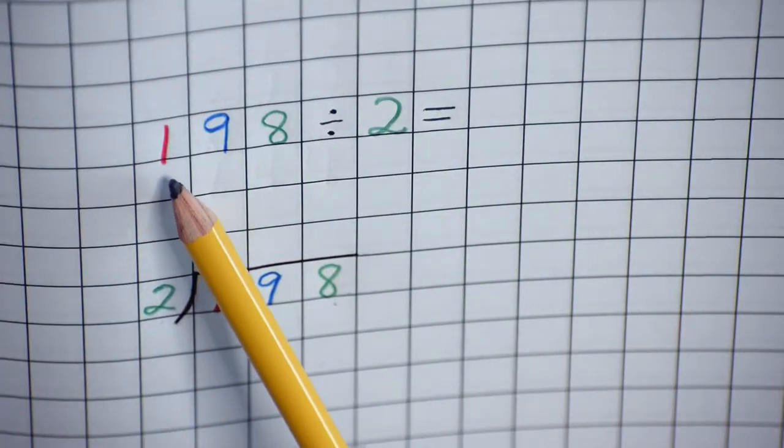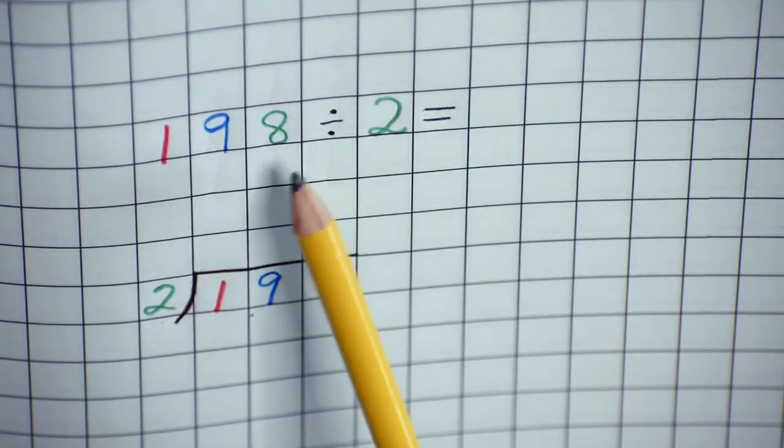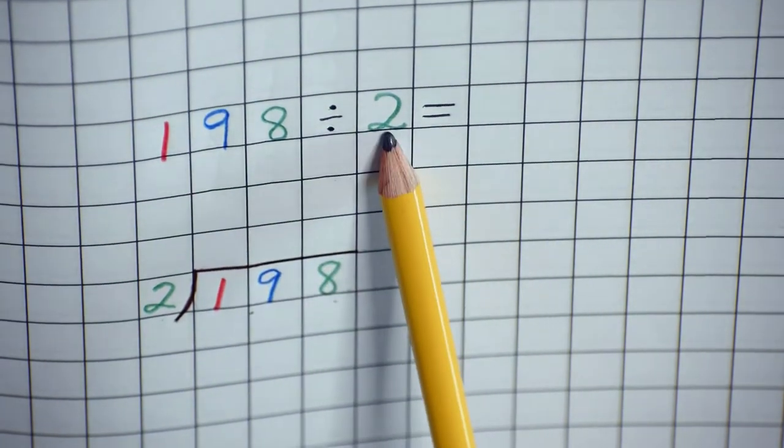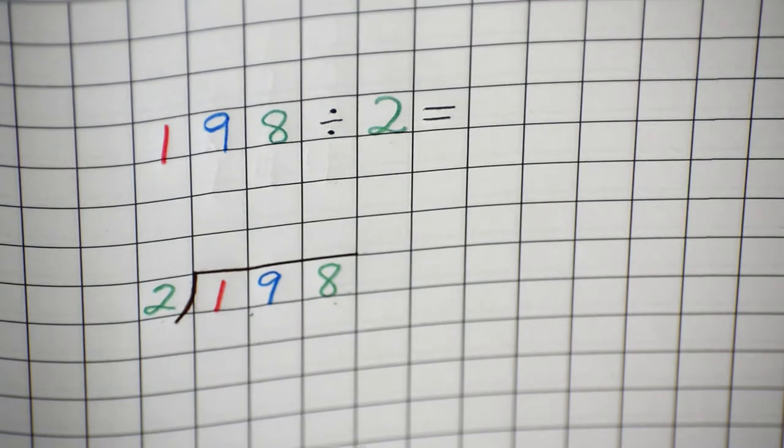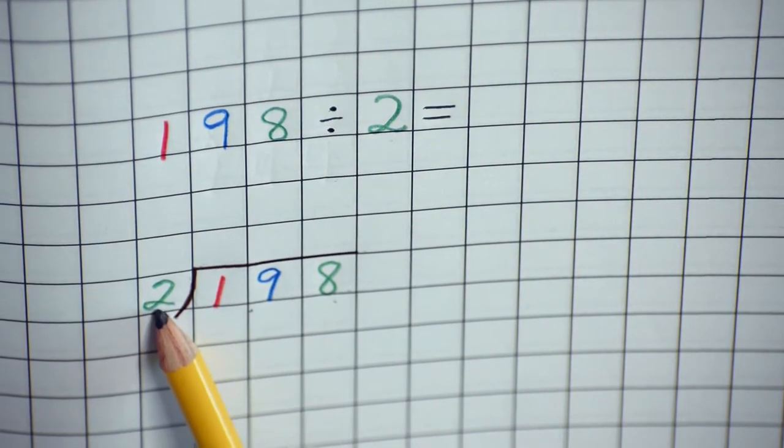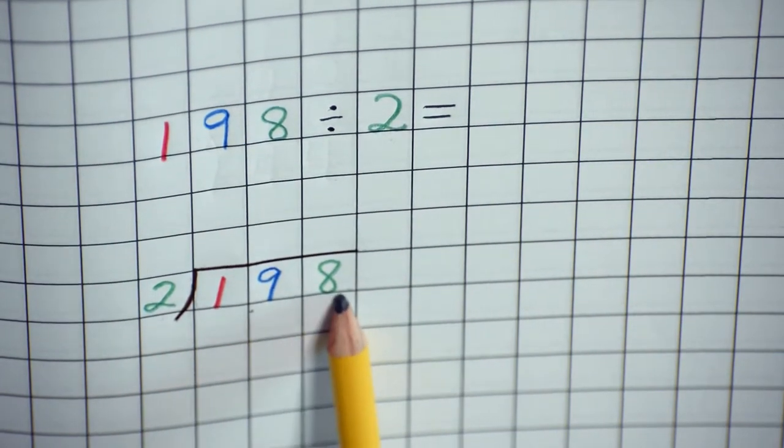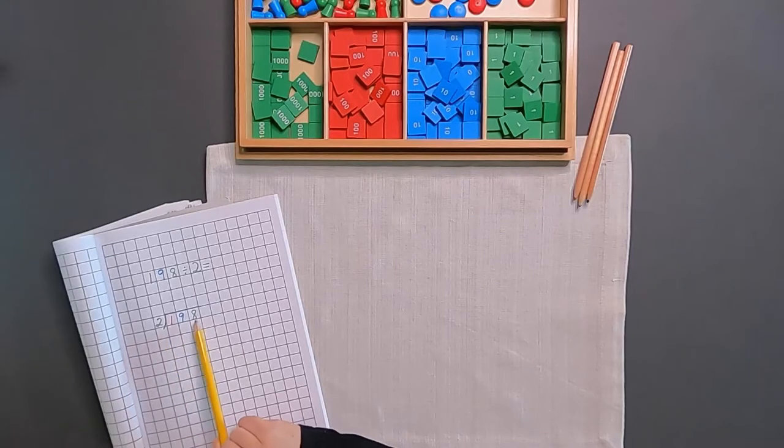Most of the time you're going to see it written like this in your classroom with your dividend first and then your divisor. On occasion you will see it written this way with your divisor first and then your dividend. But they both mean the same thing and you'll get the same answer for either one.